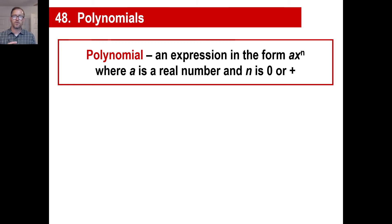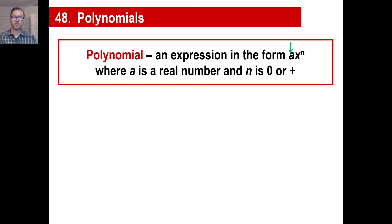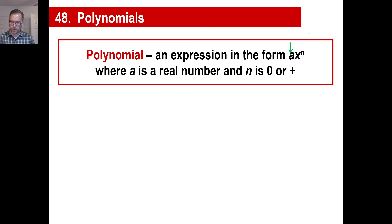It could be 2x squared plus 9. It just needs to have a real number — that's what we're working with this year. We'll deal with imaginary numbers next year. A real number is just a number that's on the number line somewhere. X is just the variable. The exponent will be either a zero or a positive number. And don't forget, if the exponent is zero, what is x to the zero power? The same thing as 1. Okay, that's a polynomial.